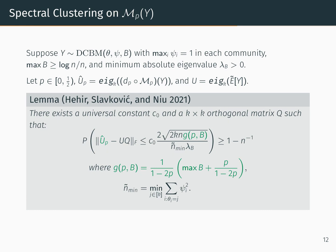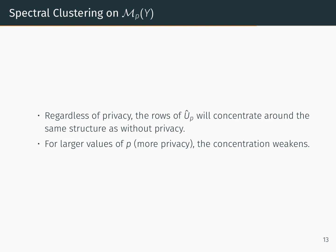The strength of this concentration depends on p, as highlighted in green. In other words, regardless of privacy, the rows of û_p will concentrate around the same structure as they do without privacy. But for larger values of p — which is to say, for more privacy — this concentration weakens.